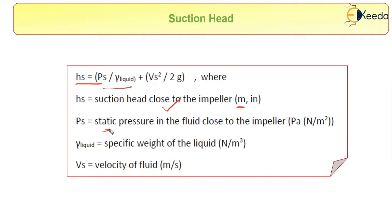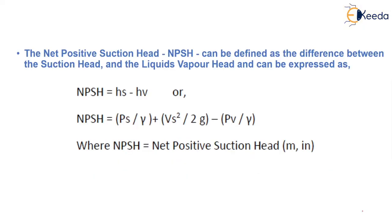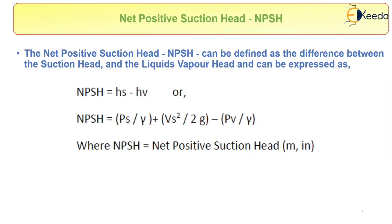ρg is the specific weight, which is also equal to ρg, and vs is the velocity of fluid. This is regarding suction head. Now next there is one more concept regarding net positive suction head.